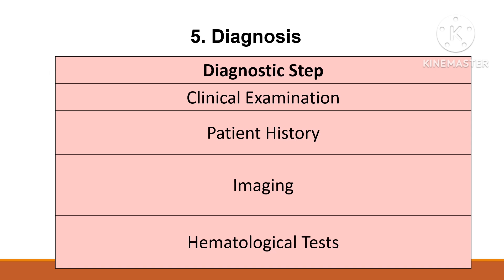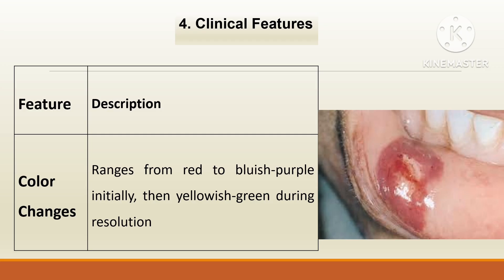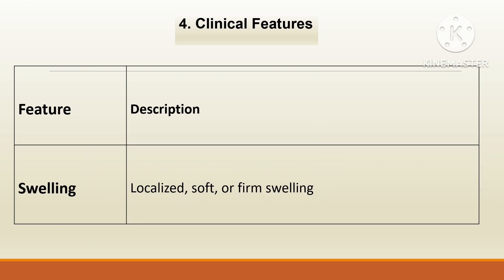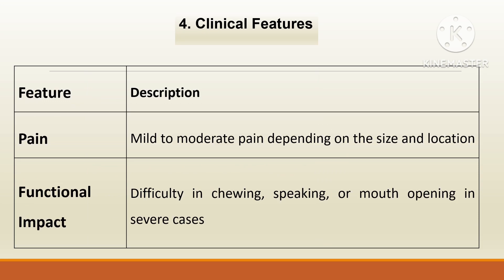For patients with unexplained hematomas, coagulation profiles are assessed. Clinically, hematoma color ranges from red to bluish-purple initially, then yellowish or green during resolution. It presents as localized soft or firm swelling, with mild to moderate pain depending on size or location. Patients may also face difficulty in chewing, speaking, or mouth opening in severe cases.